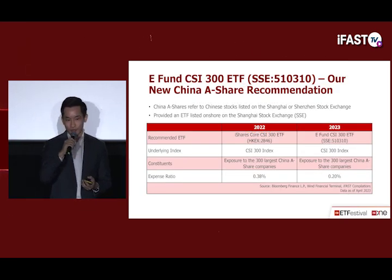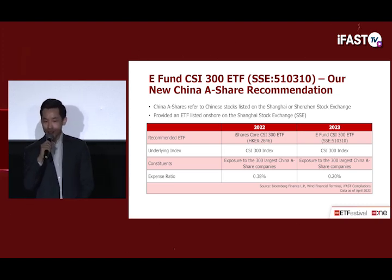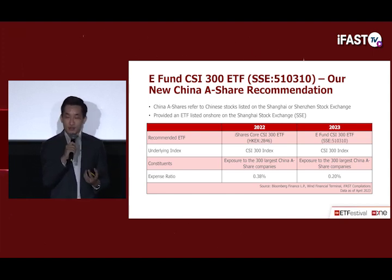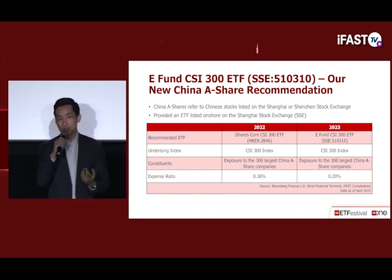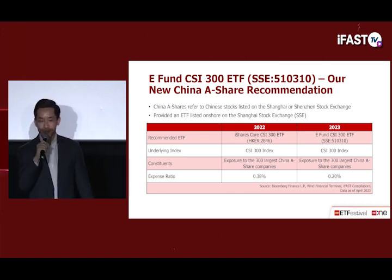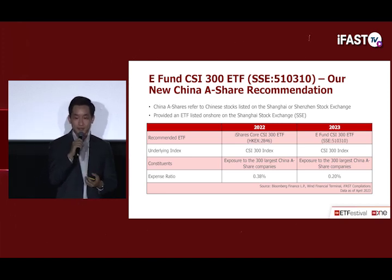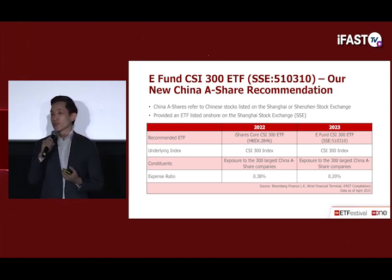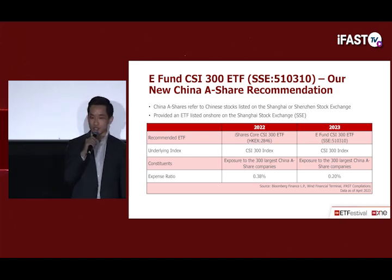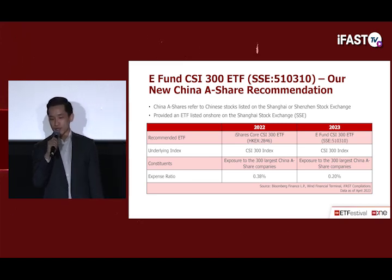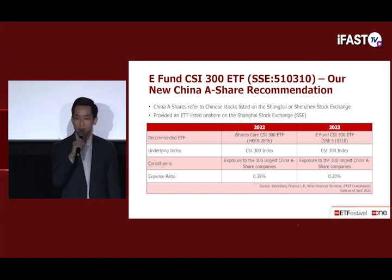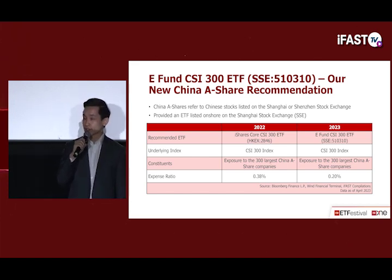Starting with core equity holdings, we have made changes to the China A share recommendation. As a house, although we have maintained a negative view on Chinese equities since late 2022, we are positive on onshore Chinese A shares. Chinese A shares refers to stocks listed on either the Shanghai or Shenzhen Stock Exchange. One of the most commonly used benchmarks is the CSI 300 Index, which tracks the top 300 companies traded on these exchanges.